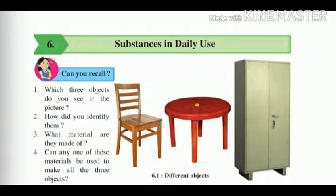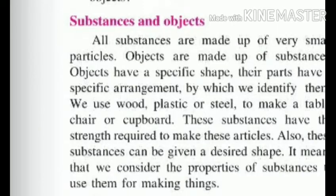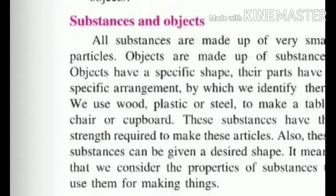Can any one of these materials be used to make all three objects? Substance is made up of small particles. The object is made up of substance. Objects have a specific shape and specific arrangement. Substance can be given a desired shape. We consider the properties of a substance to use them for making things.